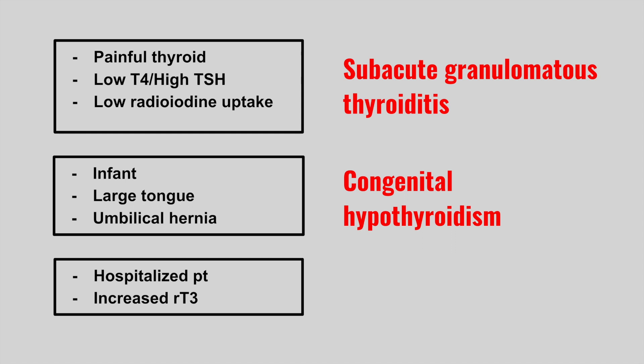The next patient is hospitalized and very ill, and now develops an increased reverse T3 level. This is euthyroid sick syndrome. Remember, you get the thyroid changes because of an underlying condition — if you treat the underlying illness, these lab values will also get better.